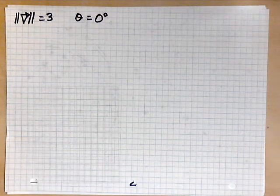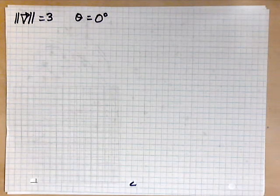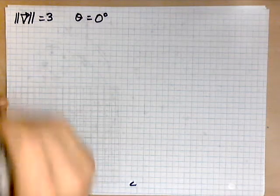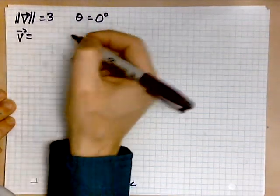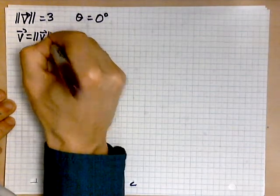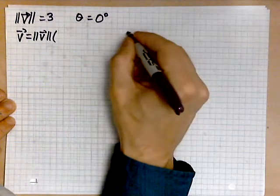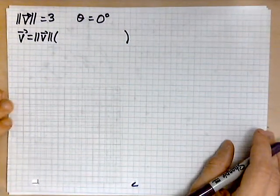So, what this means is the following. We will take v, and you write it as the magnitude of v, multiplying the unit vector given in terms of the cosine and sine function.